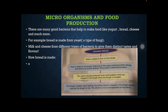For example, bread is made from yeast. Yeast is a type of fungi. Milk and cheese use different types of bacteria to give them distinct taste and flavor.